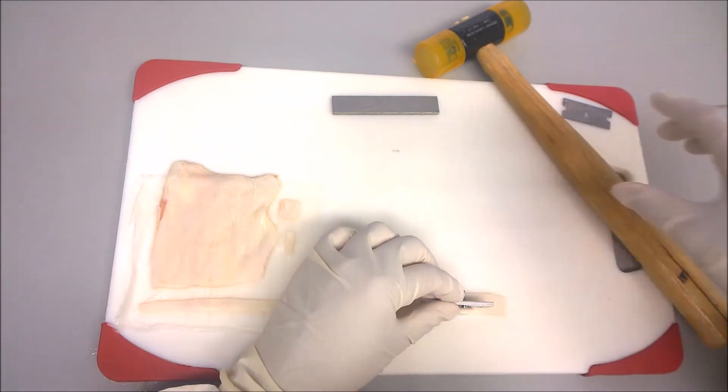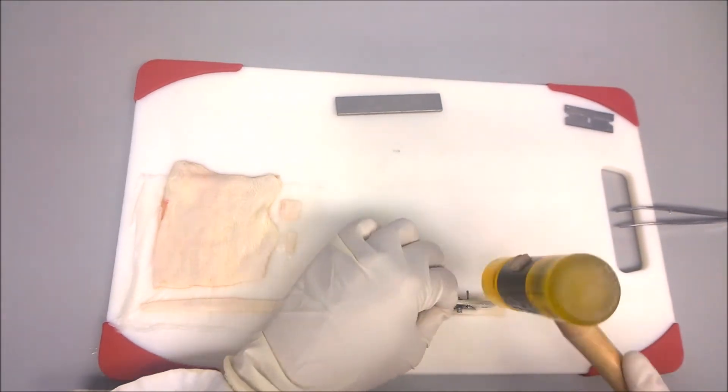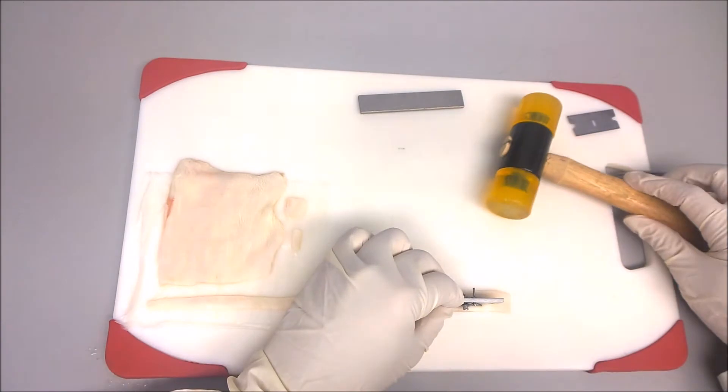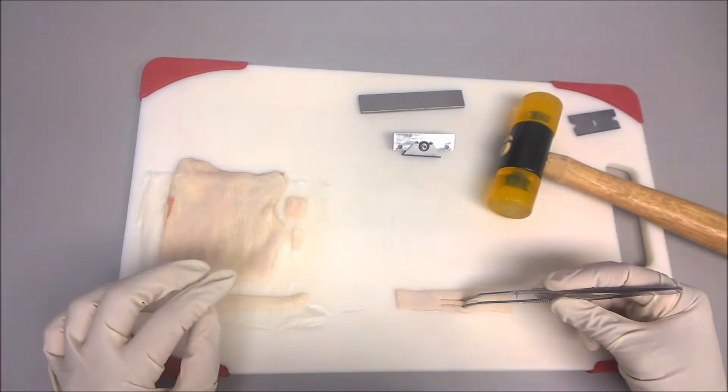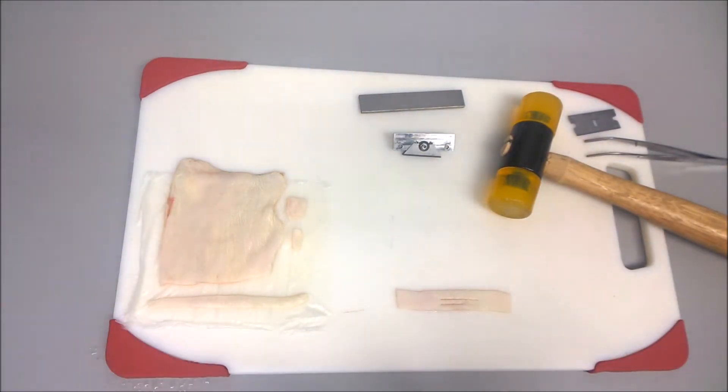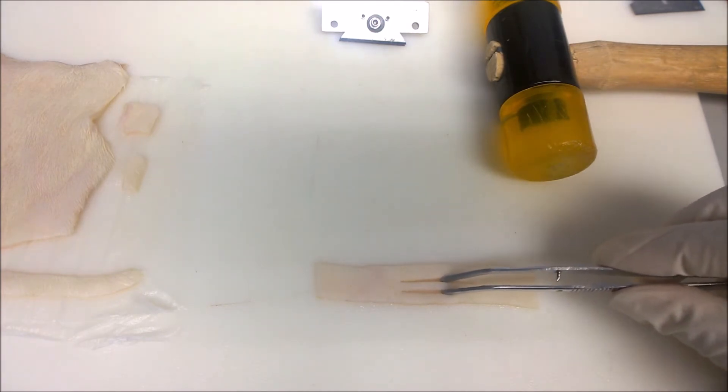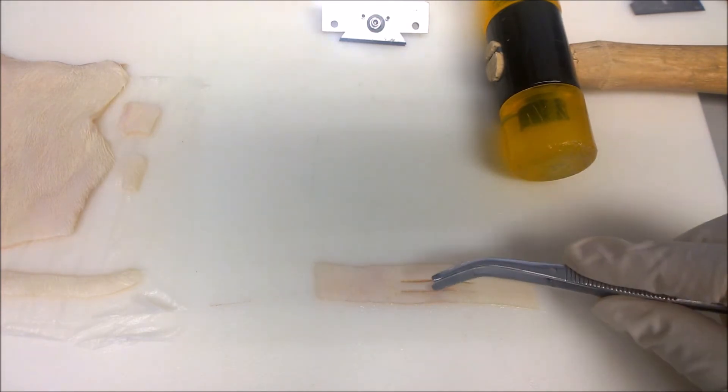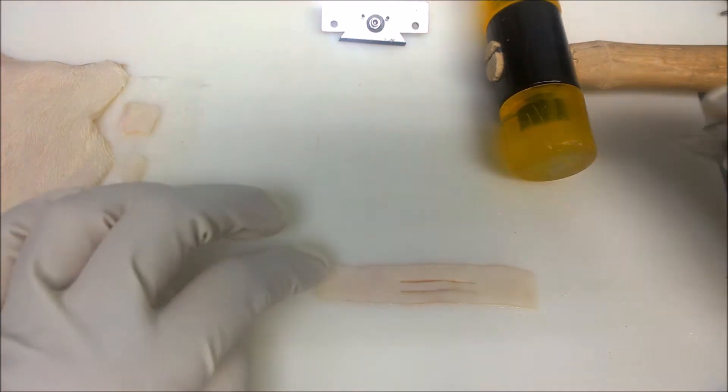Then center the cutting die on the skin to make the middle cut. Firmly hold the cutting die in place and use the mallet to cut through the skin. Use a sufficient force to cut the entire section.